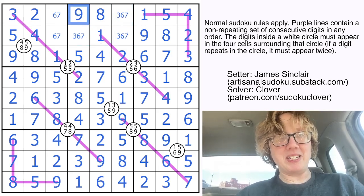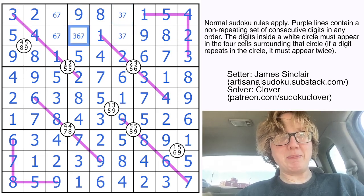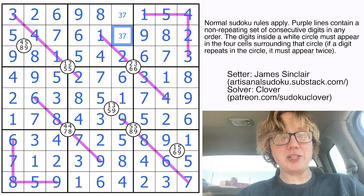So 9 can't go in those cells. That's going to be a hidden 9. Those can't be 6. There's my 6. And that should be it.